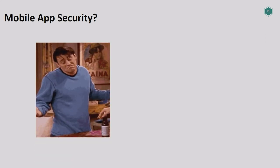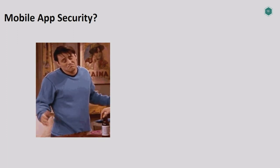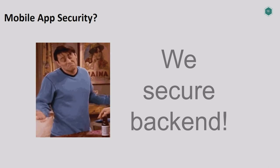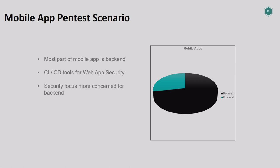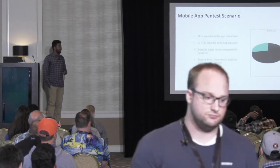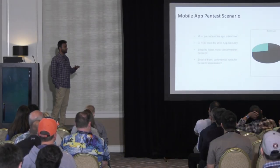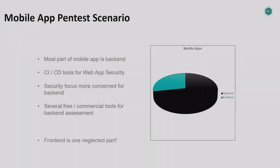When I talk with managers who handle mobile security, they say mostly they are securing the backend because there are lots of tools for it. Most of the applications are hybrid where the backend is the web part. There are lots of tools for web application assessment — tools for CI/CD integration, DevSecOps where security is automated. But when it comes to the mobile front-end code — the app on the device — we have very few tools. That's the reason security focus is towards the backend, and the front-end is one of the neglected parts, which is why we've had critical findings.